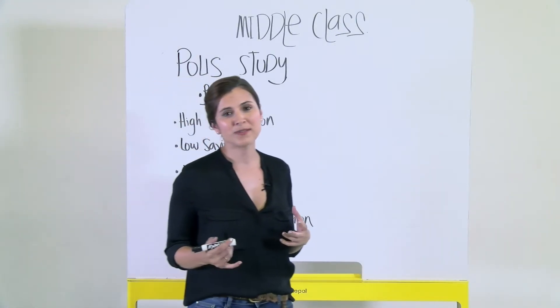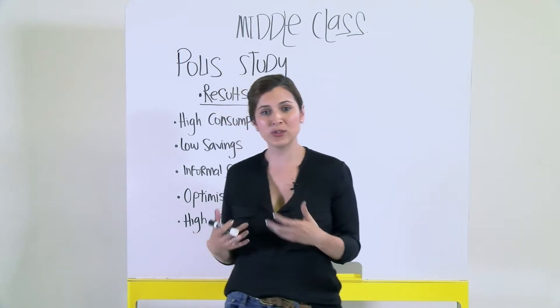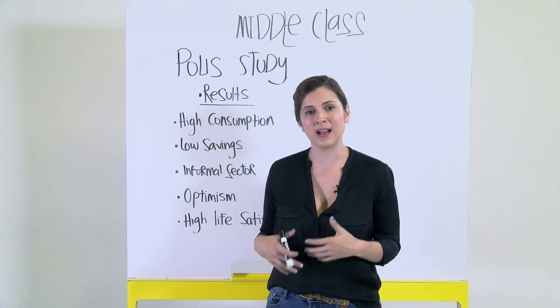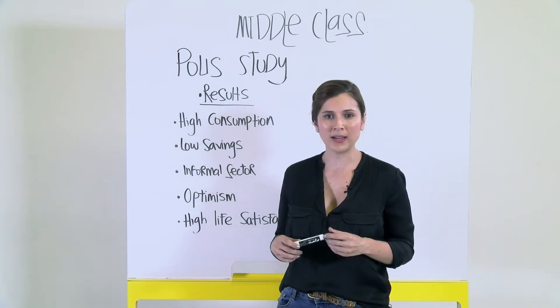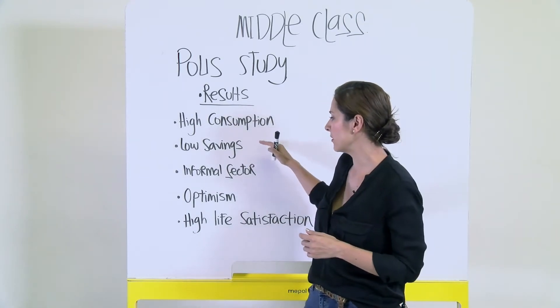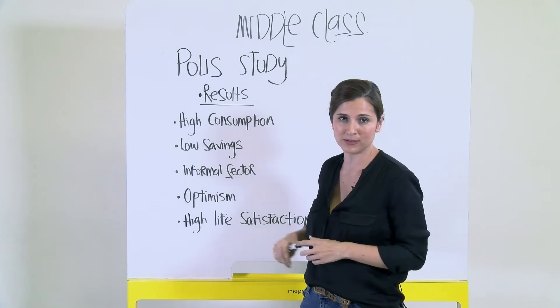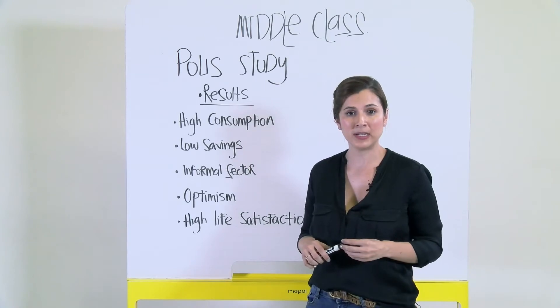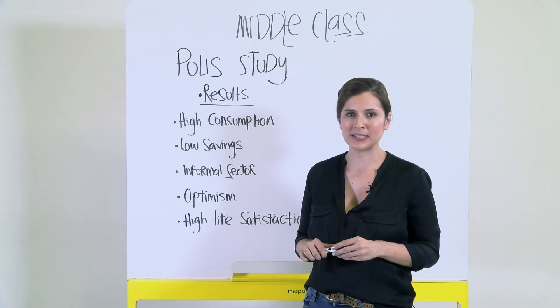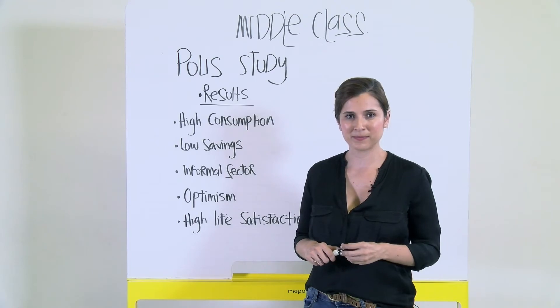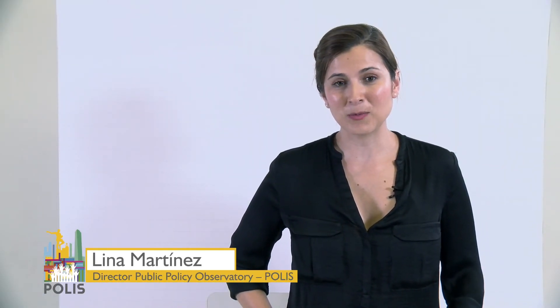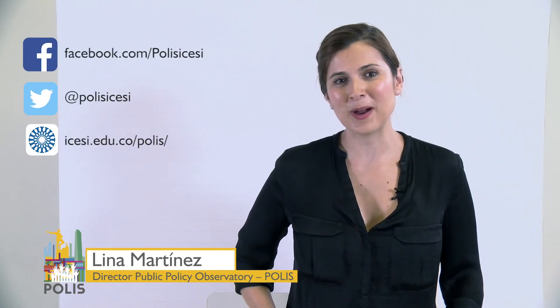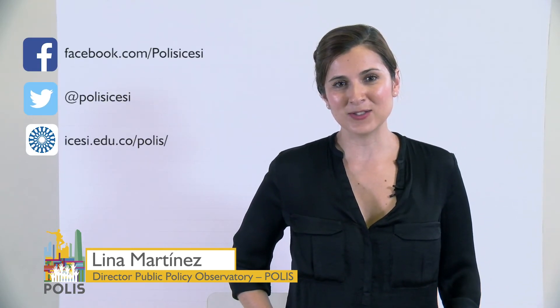In sum, the conclusions of the study conducted by Polis show a middle class that is growing and has a lot of consumption, but it is a middle class that could be highly vulnerable, especially because of low savings and high consumption. It is also a population that is optimistic, happy, and believes they will be better off in the future, but this does not translate into how they perceive the government. The full version of the policy brief is available on our web page, and we invite you to follow us on Twitter and Facebook and share it with your network.